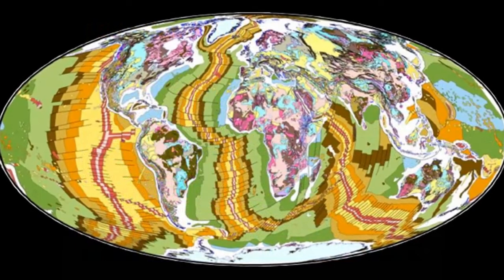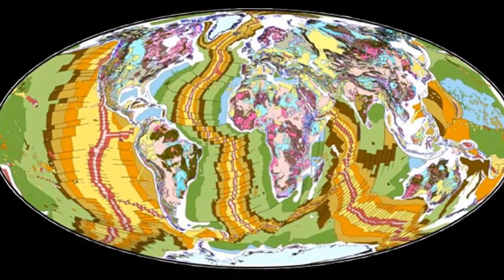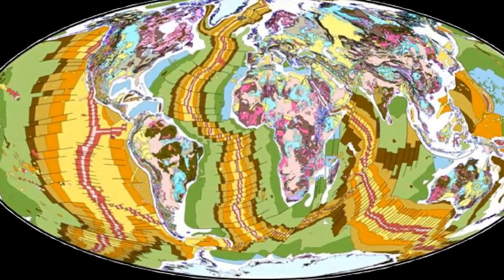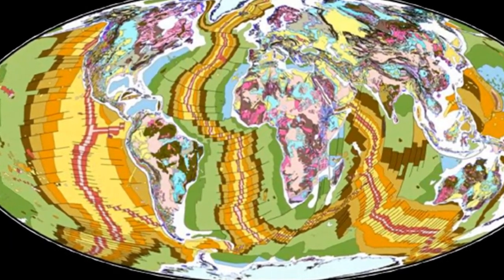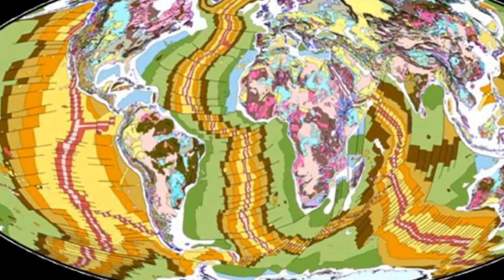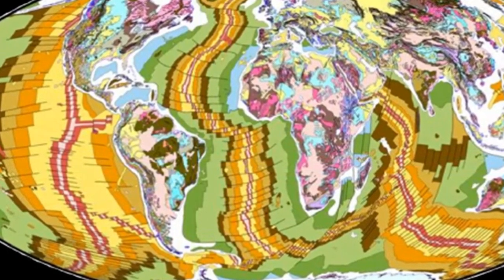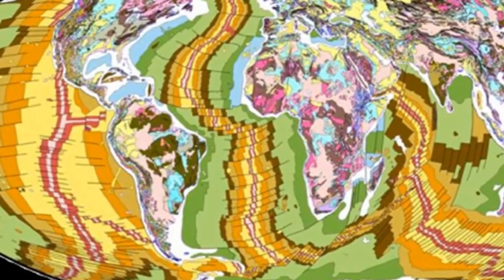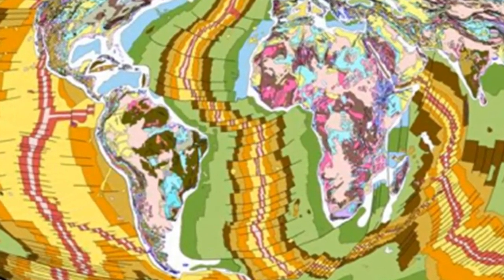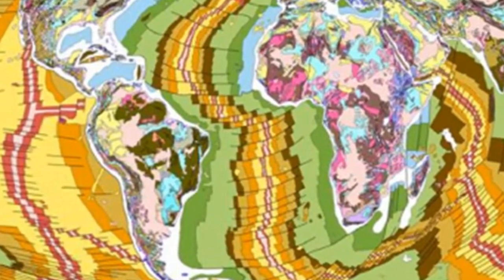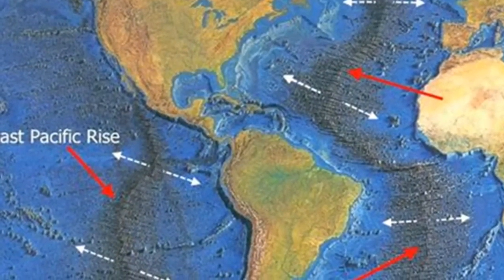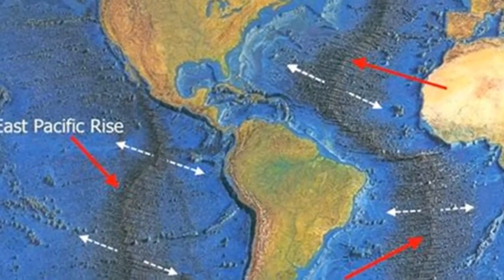However, the East Pacific Rise is not a mid-ocean feature. Rather, as its name implies, it is located in the eastern Pacific, far from the center of the ocean. At its northern end, there are two branches: one that points toward Central America and another that curves toward South America.